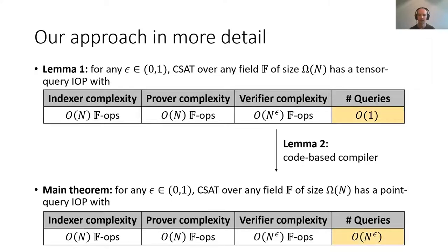Note that the tensor IOP had a constant number of queries, whereas the point query IOP in our main theorem actually has a sublinear query complexity. In some sense, this is the cost of converting from tensor queries, which are very powerful — more powerful than point queries — into point queries for which you can only see a single location.